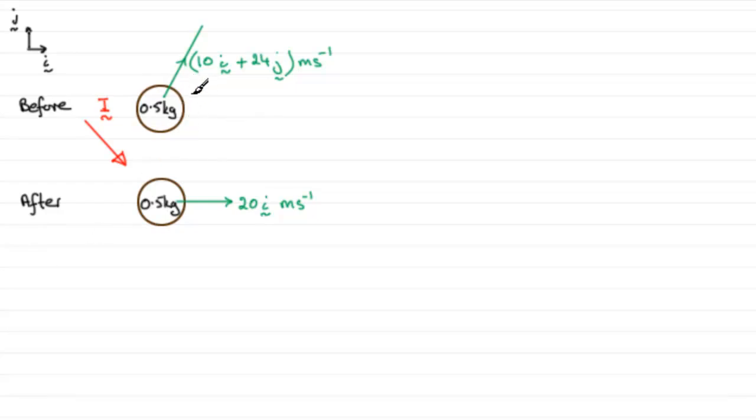Remembering that kinetic energy is a half MV squared, you're going to need to work out the speed before impact, the magnitude of this vector, and also the magnitude of this vector as well.